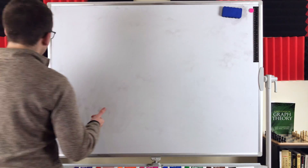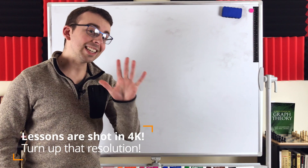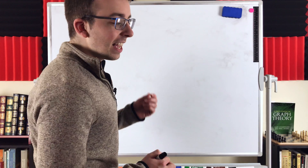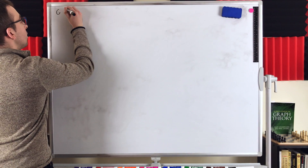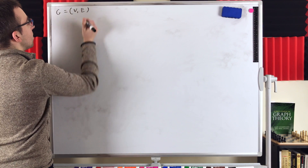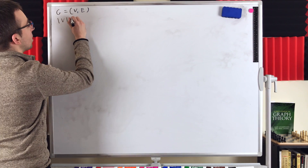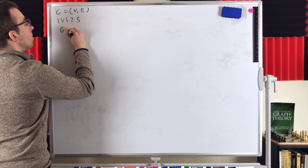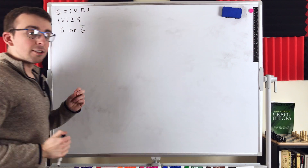We're going to use it to prove a pretty simple and neat result. We're going to show that for a graph G with at least five vertices, at most one of G or G complement is bipartite. They can't both be bipartite. So let's say we've got a graph G with a vertex set V and an edge set E.